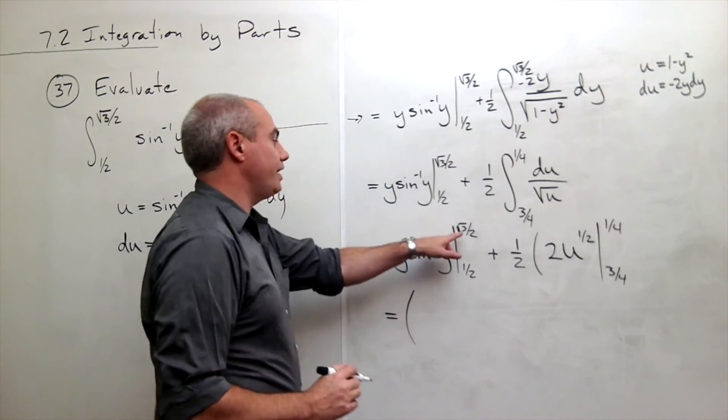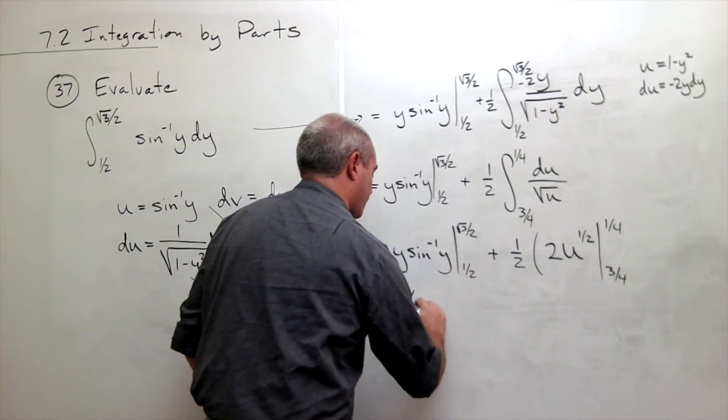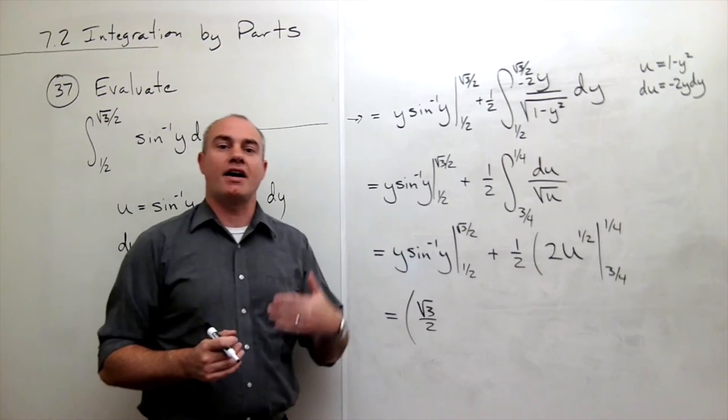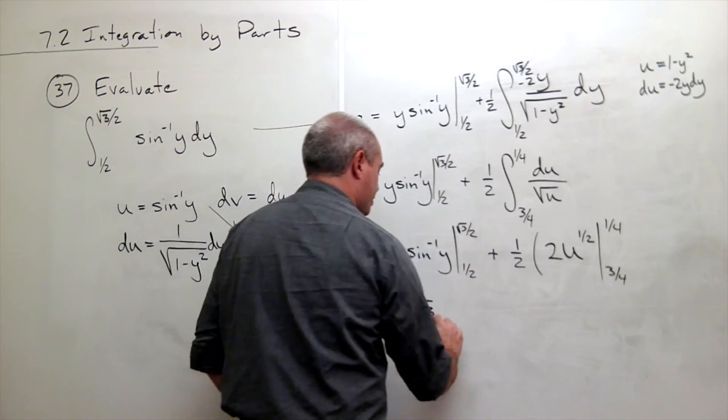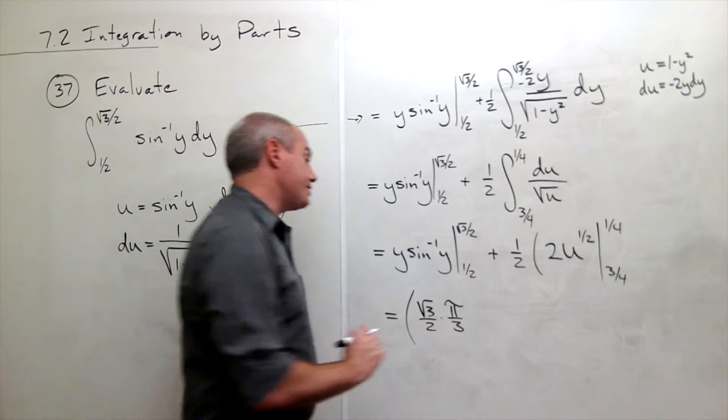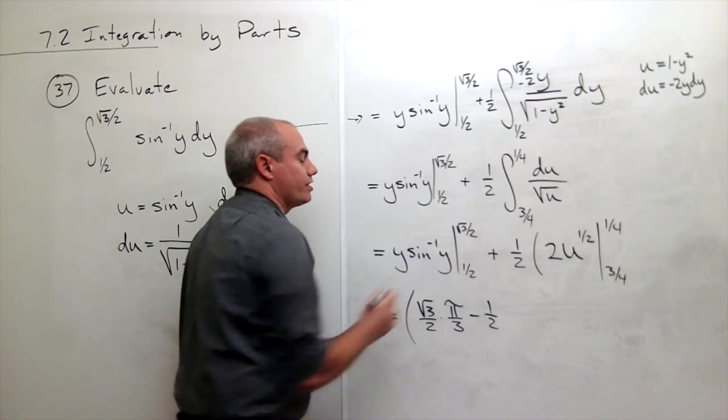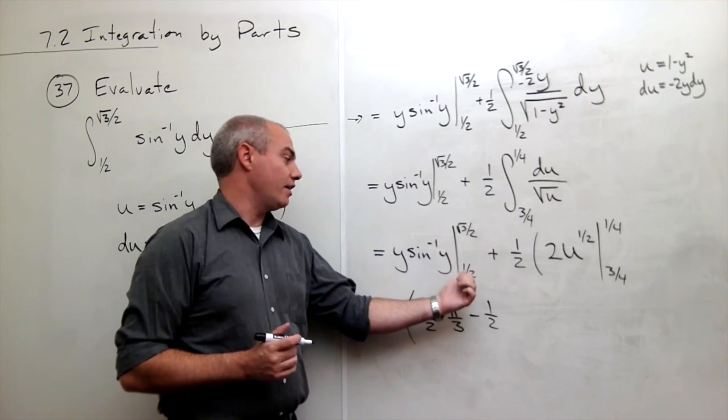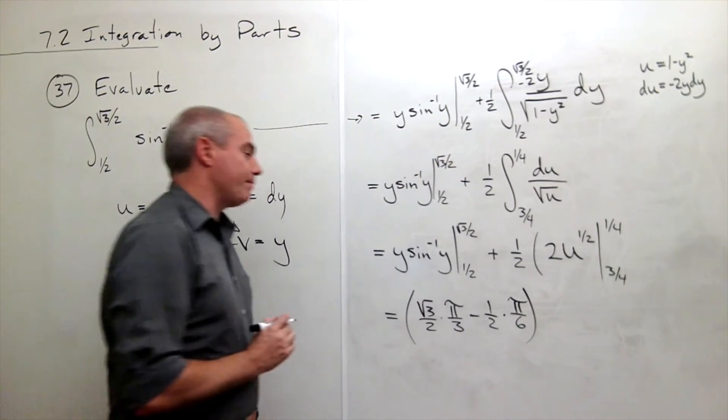Let's do it. If I plug in root 3 over 2, I get root 3 over 2 times sine inverse of root 3 over 2. In other words, sine of what angle gives me root 3 over 2? And the answer is pi over 3. Minus, plug in 1 half, and I get 1 half times sine inverse of 1 half. In other words, sine of what angle gives me 1 half? And that would be pi over 6. So that piece is done.